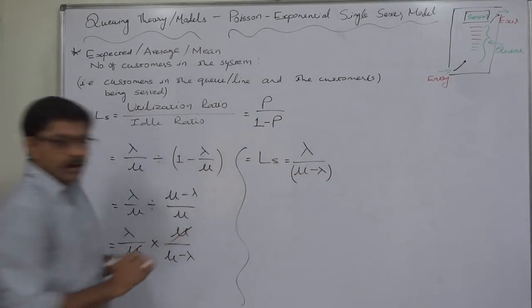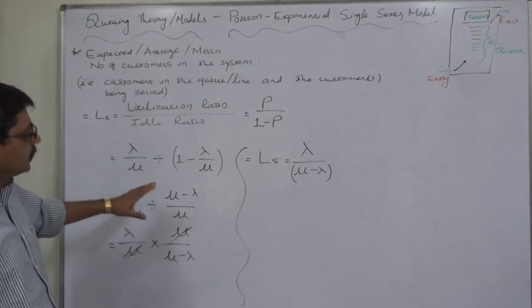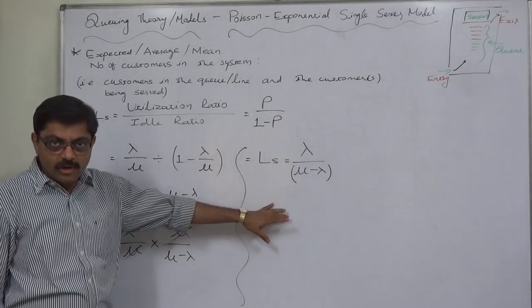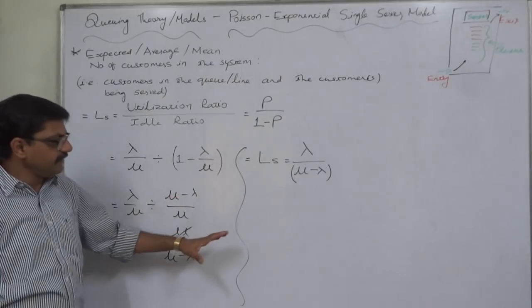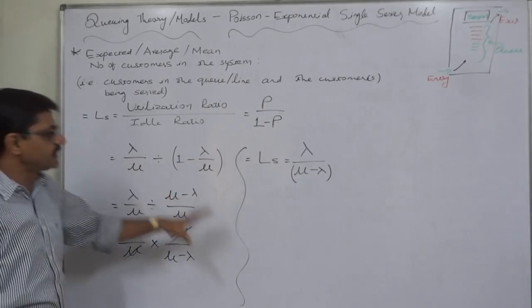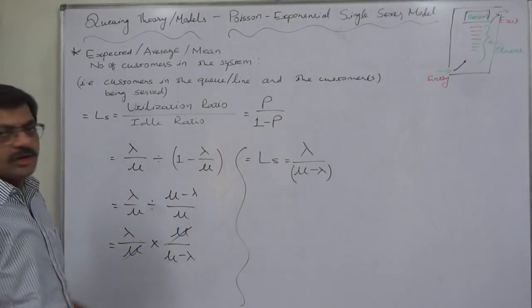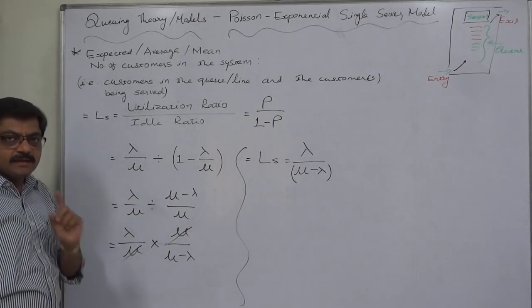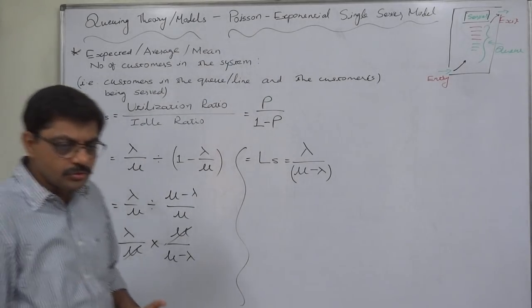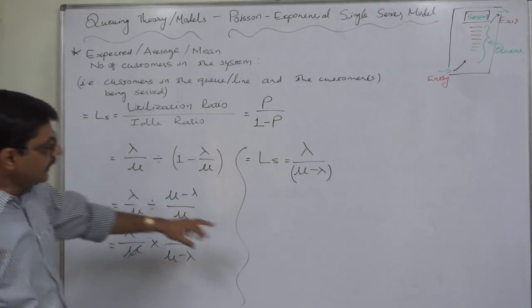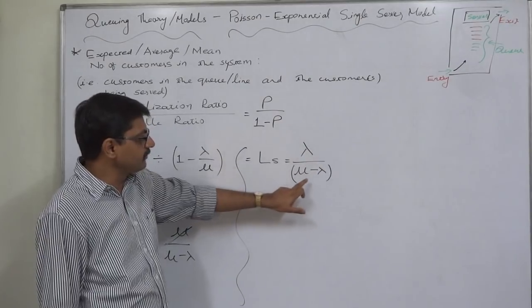Actually we don't require to study this type of derivation of formula, but since it is a very brief derivation as well as it is very simple, and most importantly this is the first formula we are discussing - my intention is very clear. I want to suggest you a formula in which we can directly use the statistical values of lambda as well as mu.